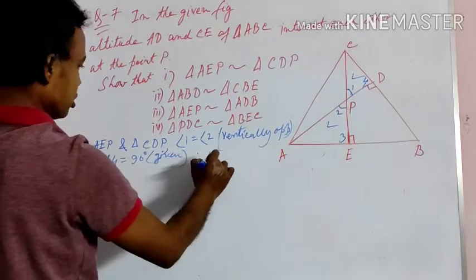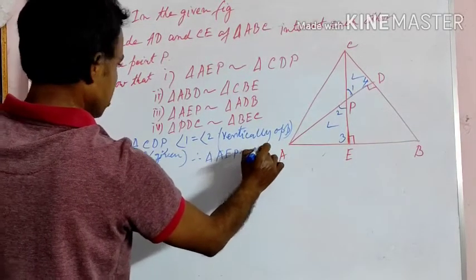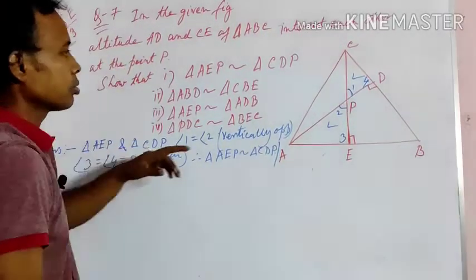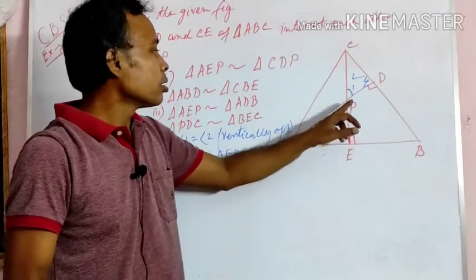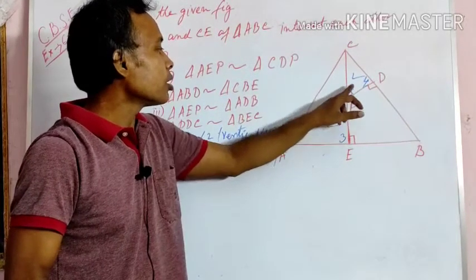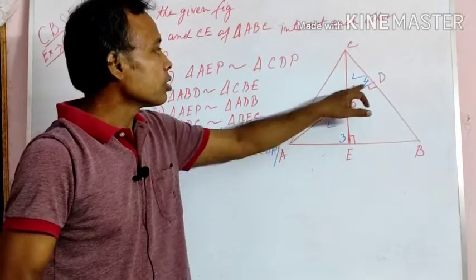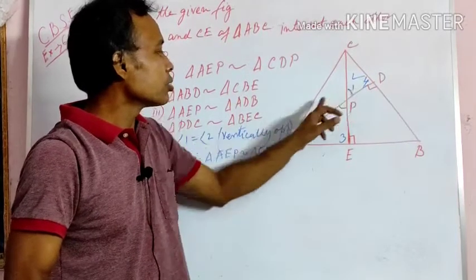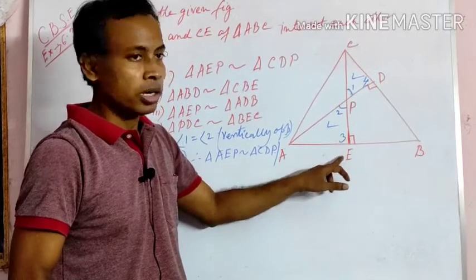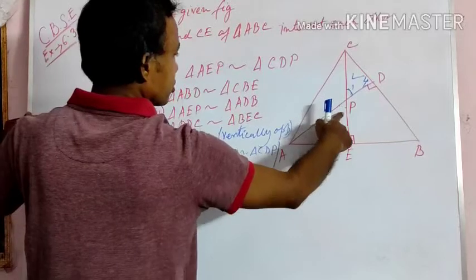By AA similarity, triangle AEP is similar to triangle CDP. Two triangles AEP and CDP are similar because angle 1 and angle 2 are vertically opposite angles, and angle 3 and angle 4 are each 90 degrees — since AD and CE are altitudes, they meet the opposite sides at 90 degrees at points D and E respectively. Therefore, two triangles are similar. This is the first question solved.